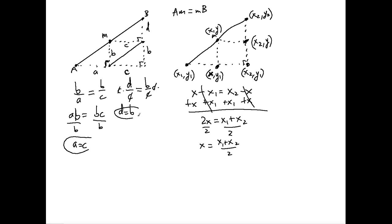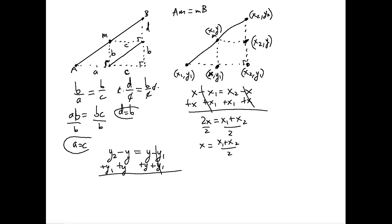The Y coordinate follows the same logic using the fact that D equals B. We express D as Y2 minus Y and B as Y minus Y1, setting them equal: Y2 minus Y equals Y minus Y1. Adding Y and Y1 to both sides gives Y1 plus Y2 equals 2Y. Dividing both sides by 2 gives Y equals (Y1 plus Y2) over 2 — the Y coordinate of the midpoint.